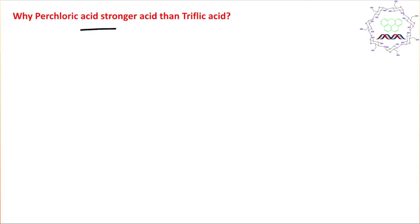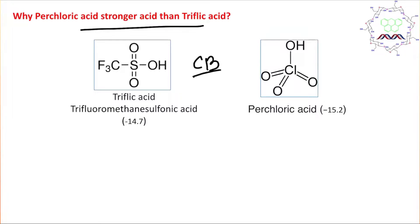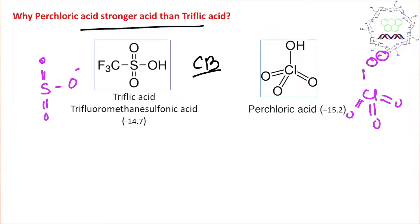Why is perchloric acid stronger than triflic acid? To calculate the strength of any acid, we consider the stability of the conjugate base. For perchloric acid, the conjugate base is perchlorate anion; for triflic acid, it is trifluoromethanesulfonate anion. Chlorine in perchlorate is in the +7 oxidation state and is more electronegative compared to sulfur, so both oxidation state and electronegativity contribute to stability.